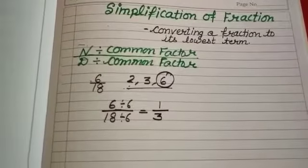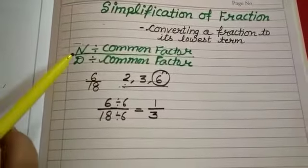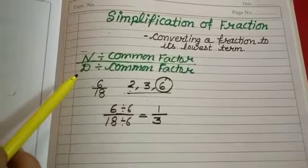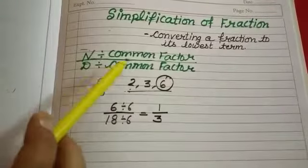For this, we have to divide the numerator and denominator by a common factor.